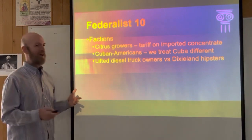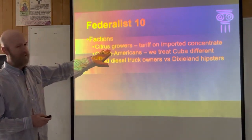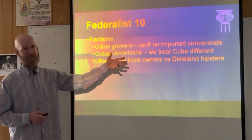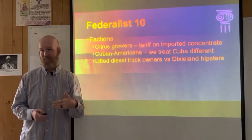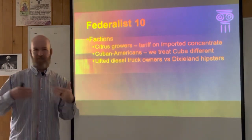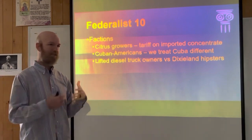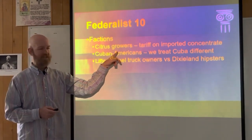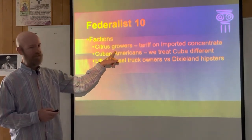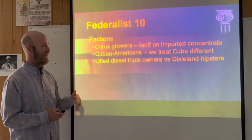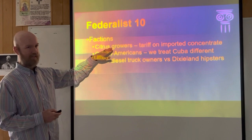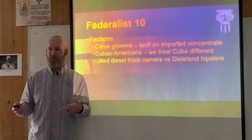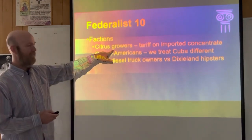Examples of modern factions would be like citrus growers here in Central Florida. Because of citrus growers, there is a tariff or a tax on all orange juice imported into the United States. Brazilians can make orange juice cheaper than Americans, so Brazilian orange juice is cheaper. That would be bad for American citrus growers, so they pushed for the government to create a tax on imported orange juice.